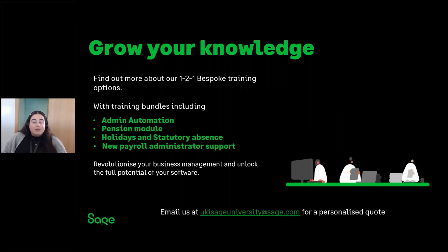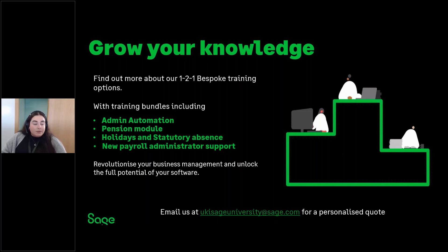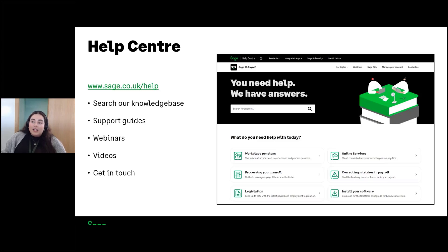Also be aware of one-to-one bespoke training options — great if you're new to payroll or just starting out with Sage 50 Payroll. Training bundles are available on a variety of topics. If interested, head to the link on the handout, let us know and we'll get you to the right person, or email UKISageUniversity@sage.com for a personalized quote. Sage.co.uk/help is our help centre — a really handy resource where you can search the knowledge base for support guides, demonstration videos, and access all previous webinar recordings. Contact options are also available if you need to get in touch.